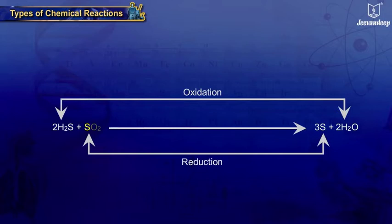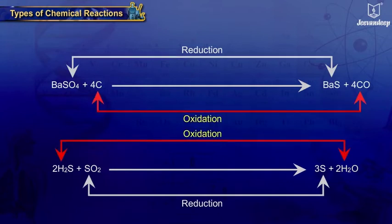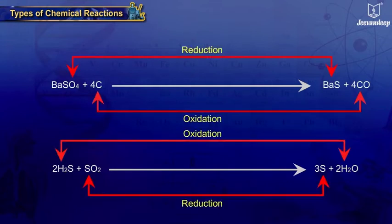In the second equation, oxygen is removed from sulfur dioxide, reducing it to elemental sulfur, and the removed oxygen adds to hydrogen, oxidizing it to water. As in both these cases oxidation and reduction reactions are taking place simultaneously, these are known as redox reactions.